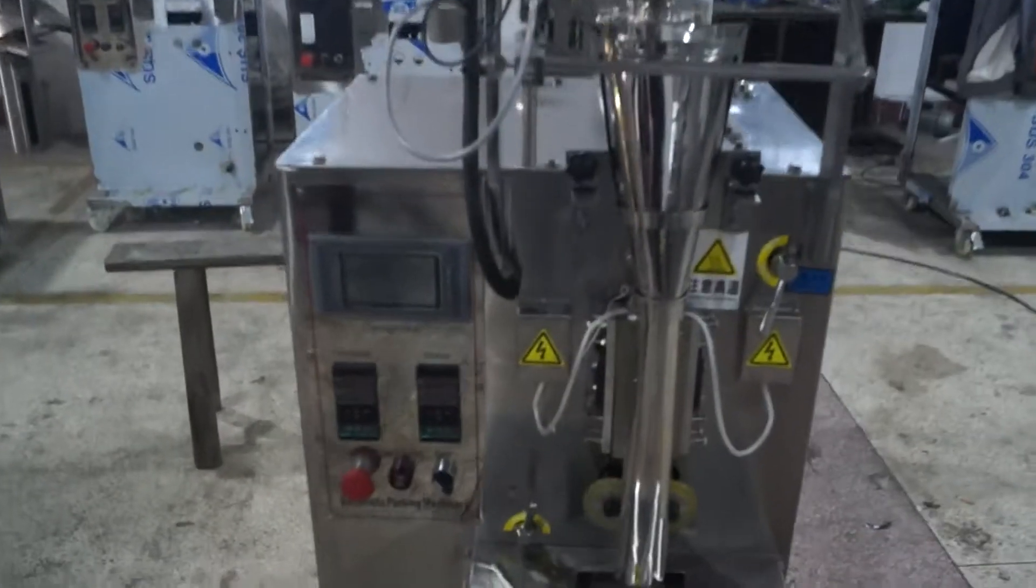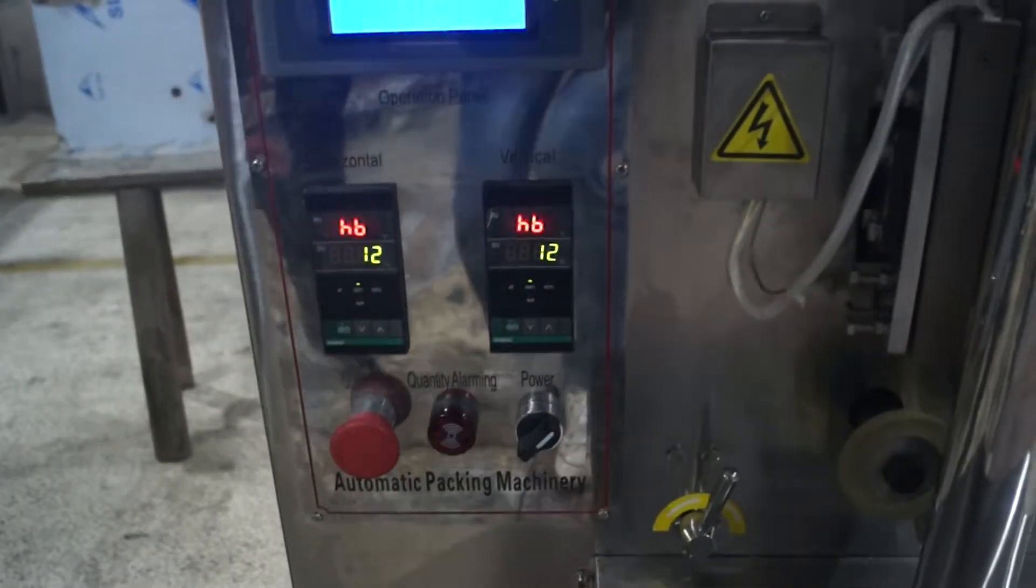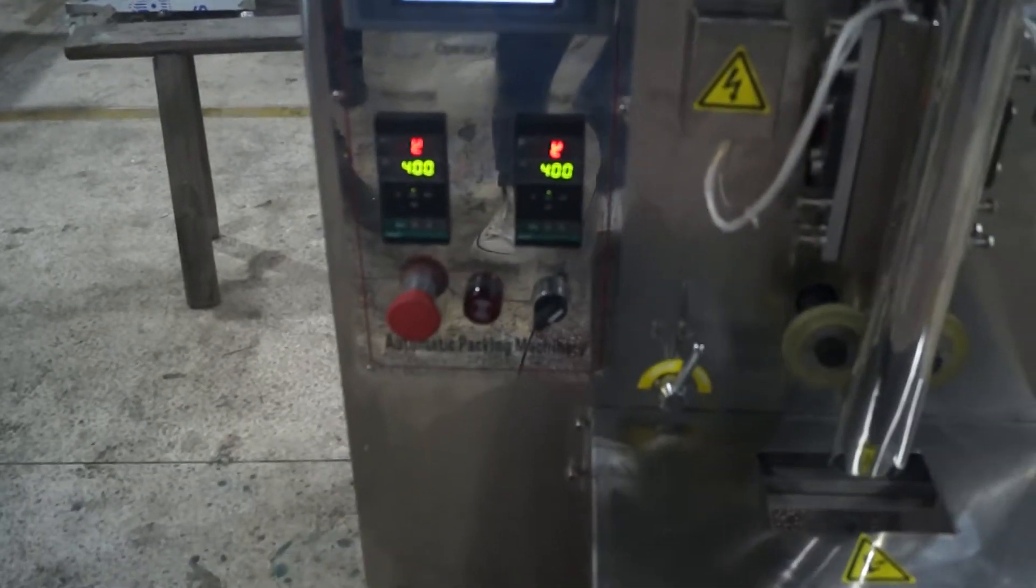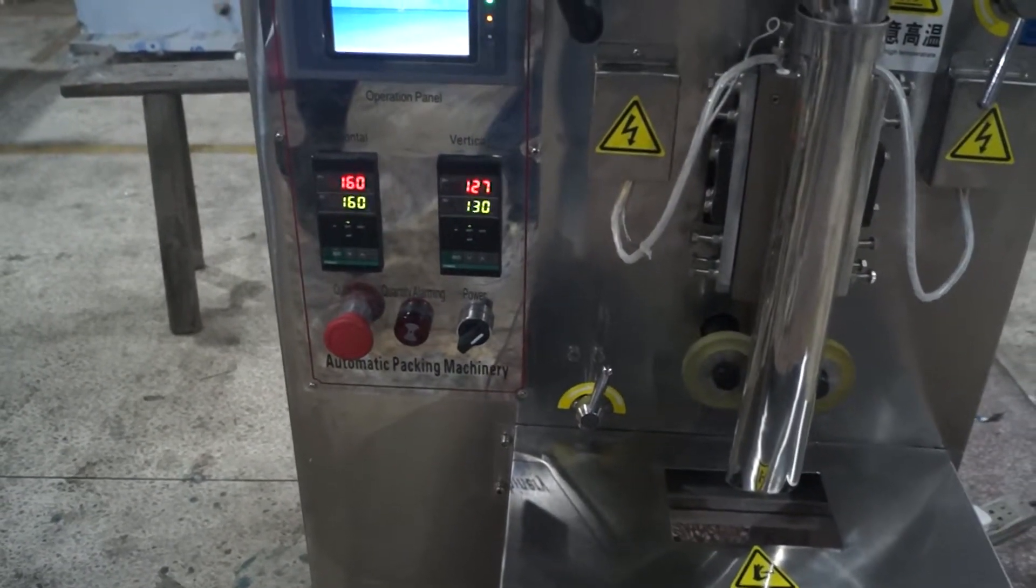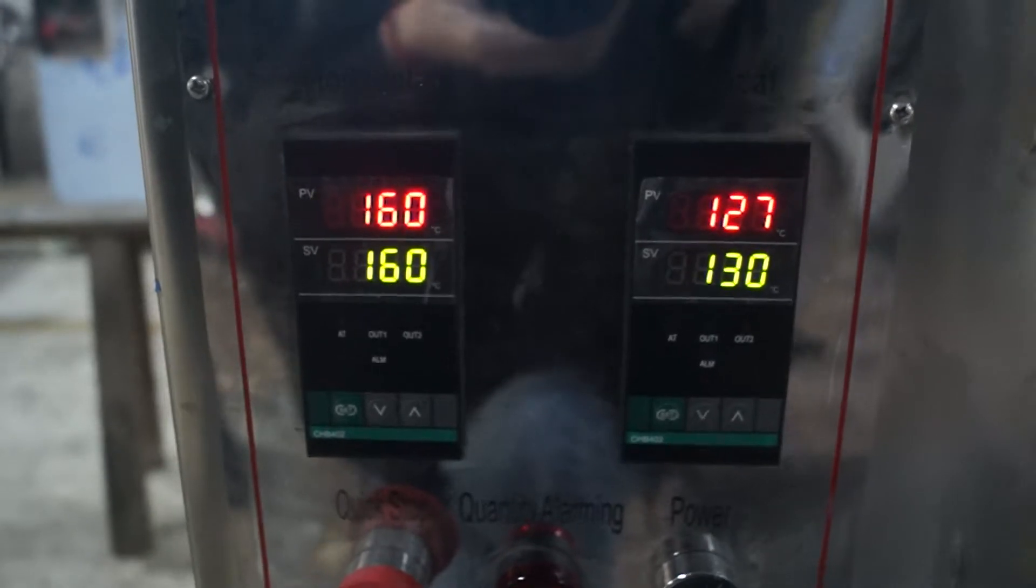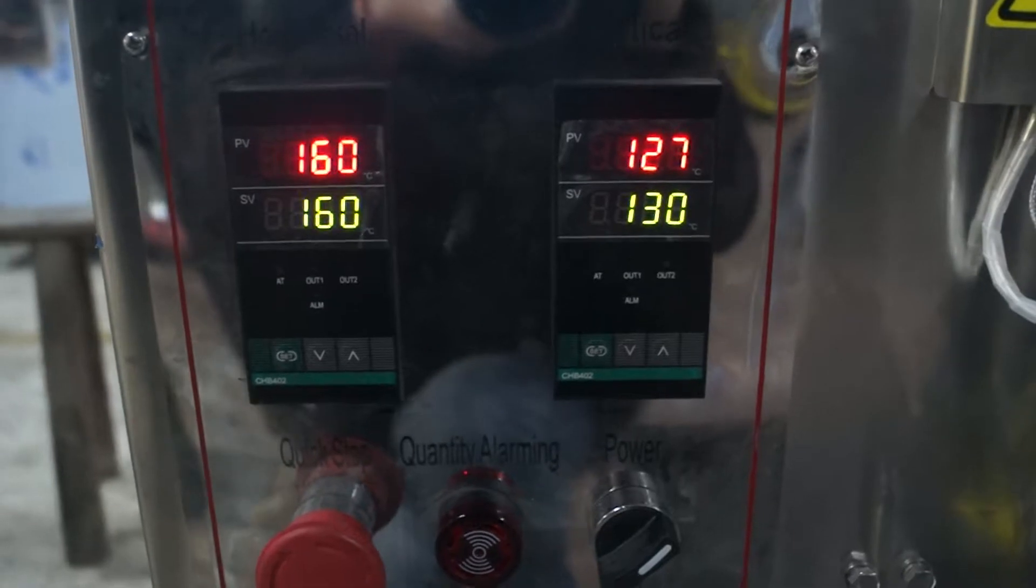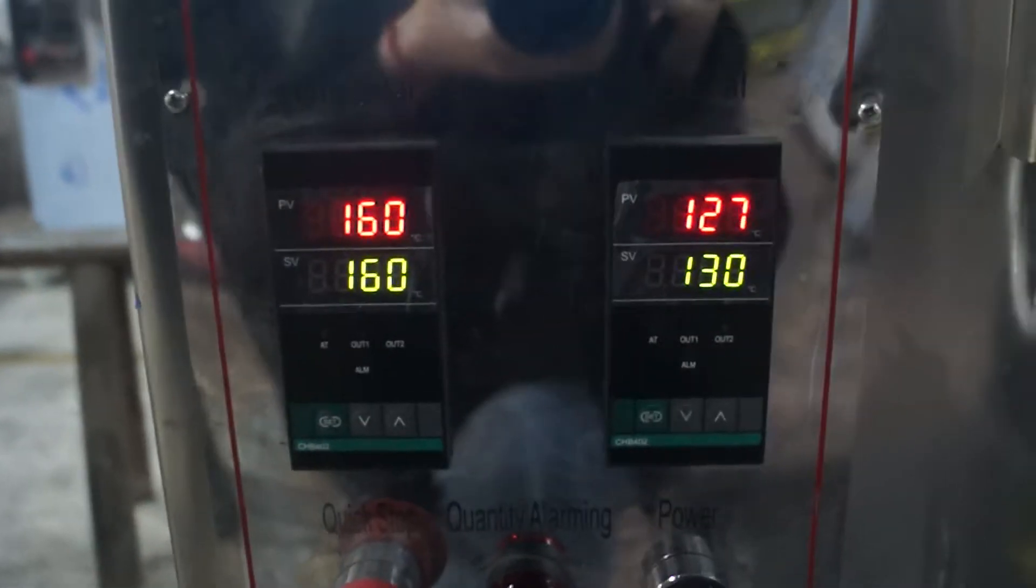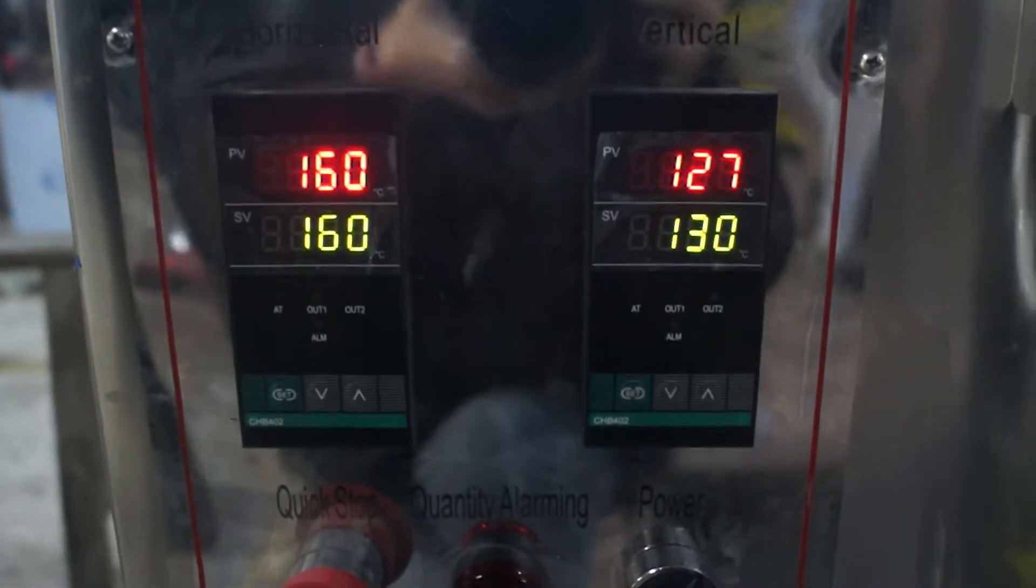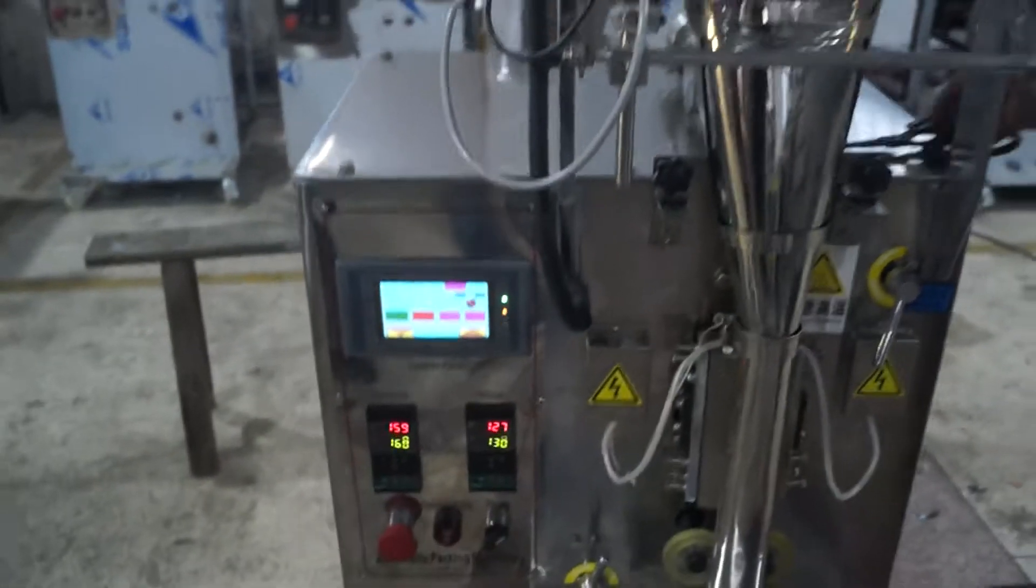Let me show you how to operate the machine. First, turn on the power switch. You can see two temperatures: the green temperature is the set temperature for your film material seal temperature. The red temperature is the active temperature. When the two temperatures are equal, the machine can work.